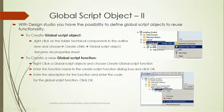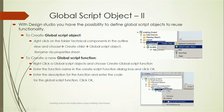To create a Global Script Object, right-click on the Technical Components folder and select 'Create Child > Global Script Objects'. To create a script function within it, right-click on the created object and choose 'Create Script Function'. You will then be prompted to enter the function name and its details.